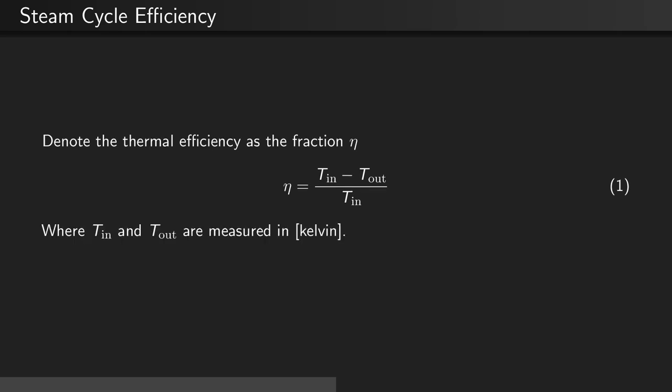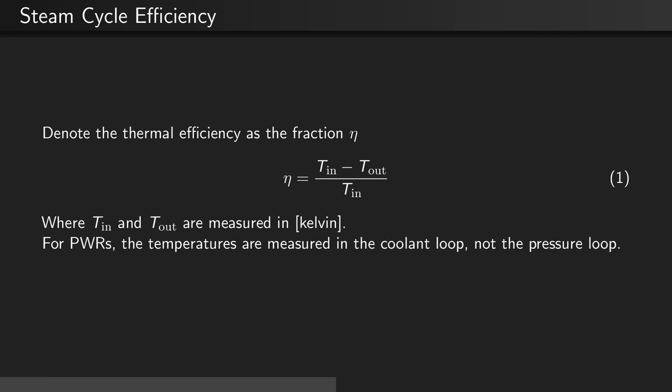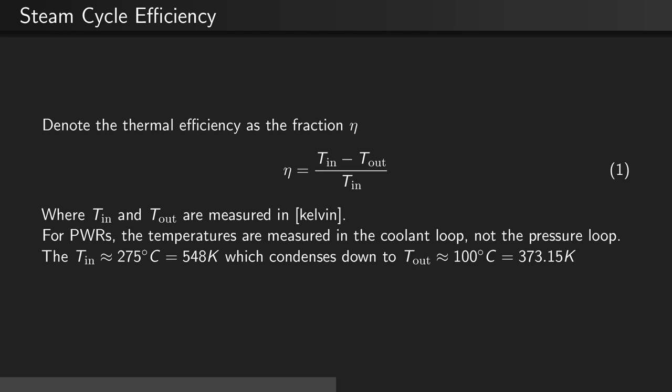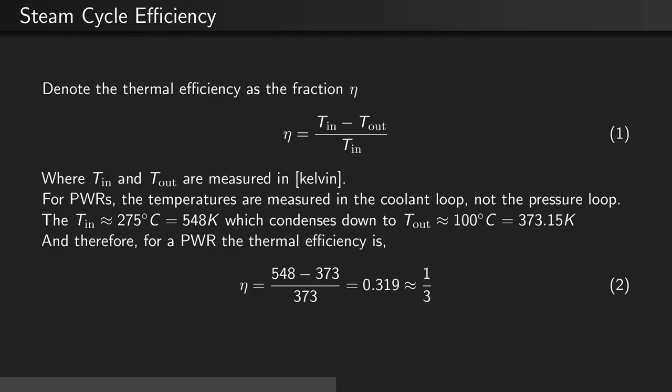For pressurized water reactors, the temperatures are measured in the coolant loop, not the pressure loop. For PWRs, the inlet temperature is approximately 548 Kelvin, which condenses down to the boiling point of water. Therefore, the thermal efficiency in this case is approximately equal to one-third.